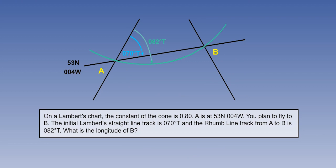Here is an ATPL exam question based on this idea. On a Lambert's chart, the constant of the cone is 0.8. A is at 53 north, 4 west. You plan to fly to B. The initial Lambert straight line track is 070 true. And the rhumb line track from A to B is 082 degrees true. What is the longitude of B?